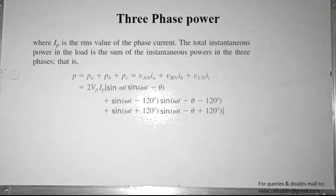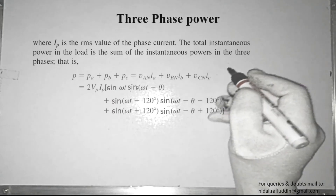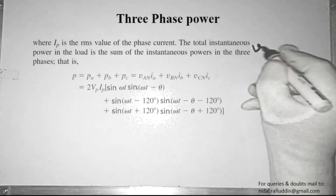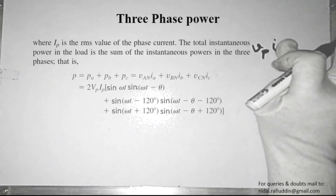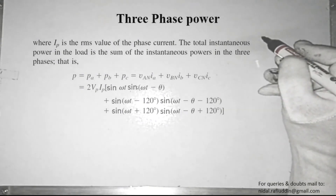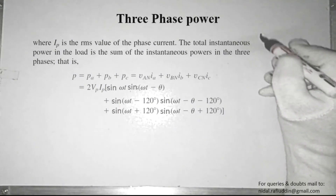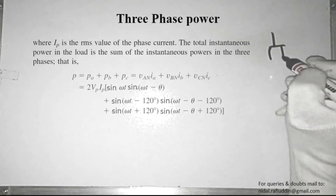Now, the total instantaneous power in the three-phase circuit is the sum of the instantaneous power in each of the three phases. Instantaneous power in each phase is the instantaneous voltage multiplied by instantaneous current. So the total instantaneous power p = pa + pb + pc.